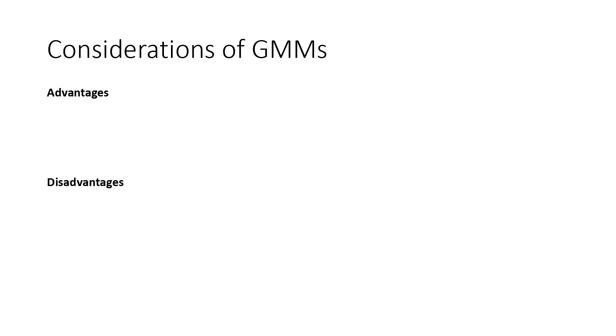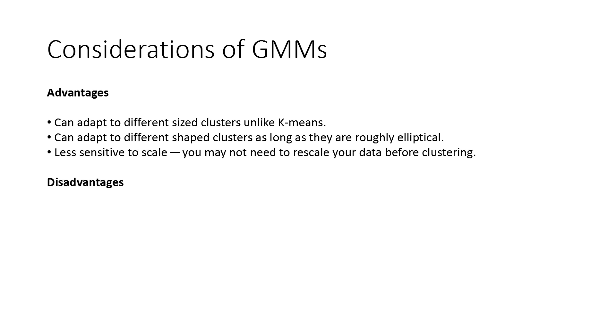Now what are some considerations of Gaussian Mixture Models? Some advantages include they are able to adapt to different size clusters unlike k-means. They can adapt to different shape clusters as long as they are roughly elliptical, and they are less sensitive to scale, so you may not need to rescale your data before clustering.